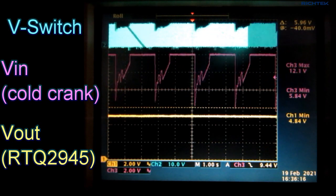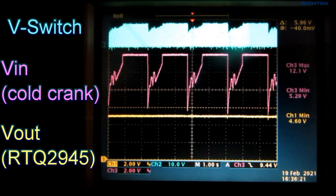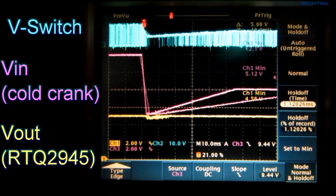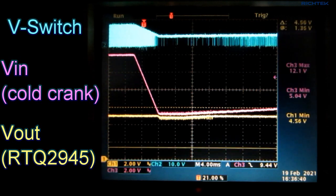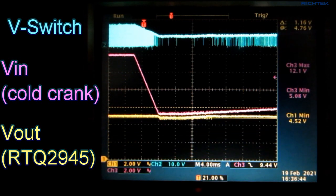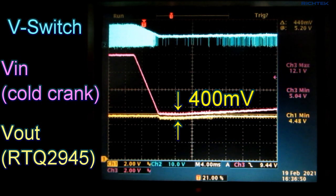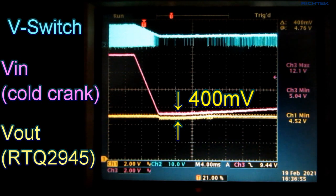Only when the input voltage drops to 5.4V or lower, the output voltage starts to drop slightly. Let's zoom in to the voltage dip. You can see that when the input voltage drops to 5.1V, the output voltage drops to 4.7V. So there is around 400mV dropout between the input and the output.